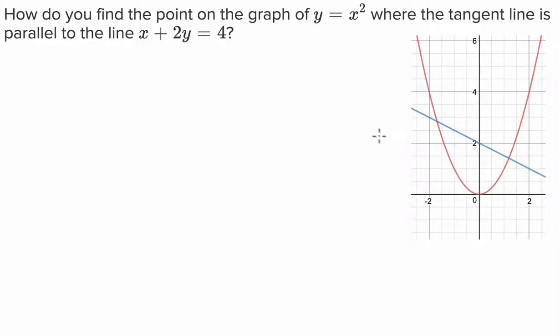G'day guys, we've got an applications of differentiation question here today. The question says, how do you find a point on the graph y equals x squared where the tangent line is parallel to the line x plus 2y equals 4?